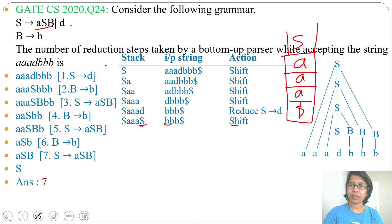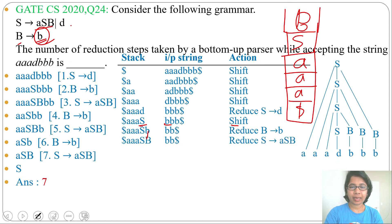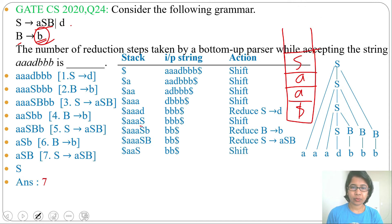We'll shift B onto the stack. Now the stack contains A, A, A, S, B. Is the top of the stack a handle? Yes, this B is a handle — B is present at the RHS. So reduce this terminal B to variable B. Now the stack contains A, A, A, S, B. Is the top of the stack a handle? Yes, ASB is a handle, so we'll reduce ASB to S. Now the stack contains A, A, S. Is the top of the stack a handle? No, this S is not a handle, so next action will be shift.